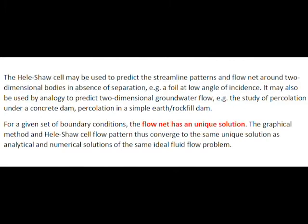The Hele-Shaw apparatus may be used to predict the streamline patterns and flow net around two-dimensional bodies in the absence of separation, such as a foil at low angle of incidence. It may also be used by analogy to predict two-dimensional groundwater flow and the study of percolation under a concrete dam.